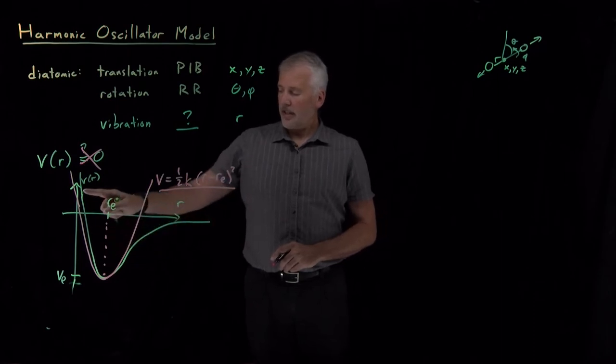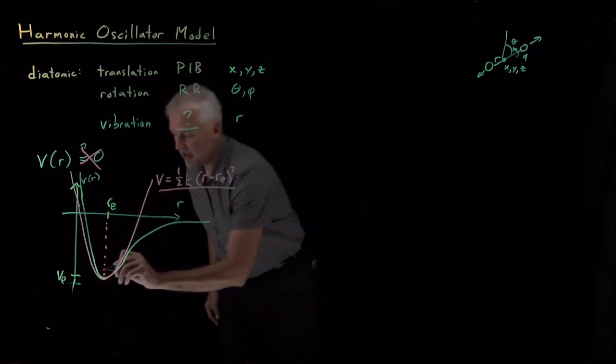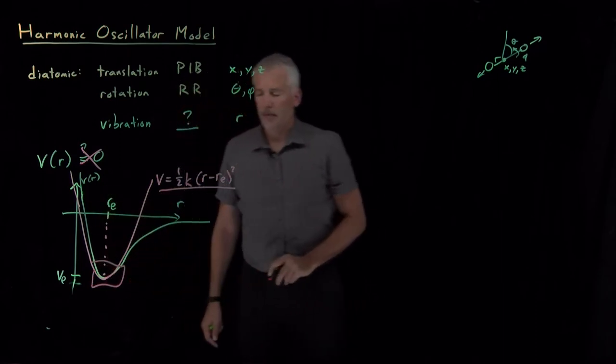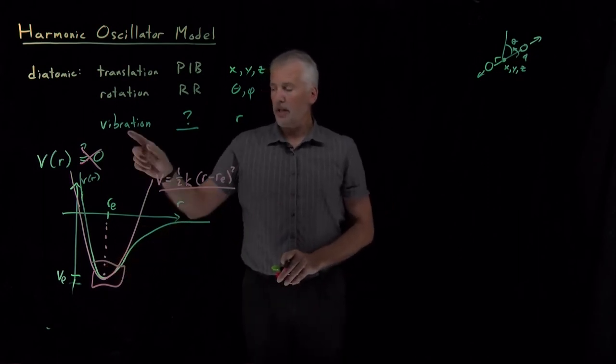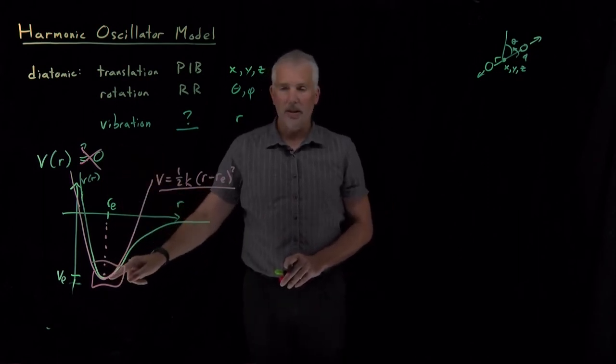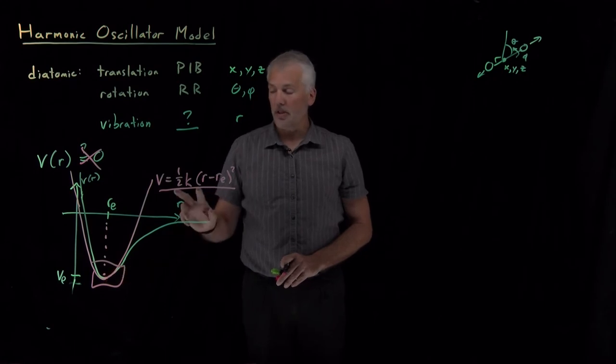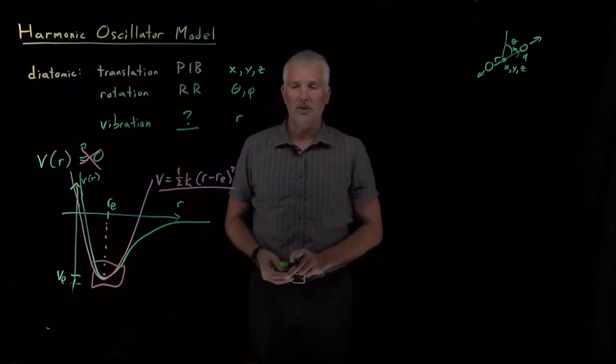It's not terribly different from this expression, especially not down at the bottom. And we'll see as we go along that usually for diatomic molecules, they spend most of their time down here near the equilibrium bond length. So this approximation is not actually too bad.